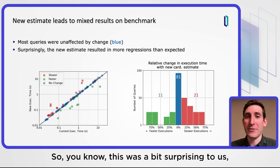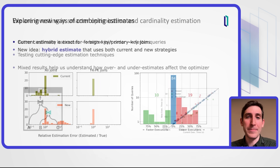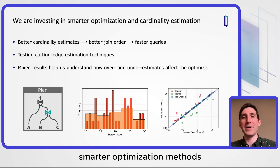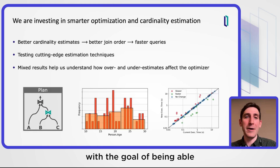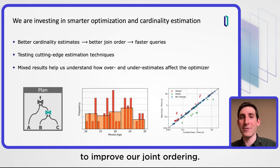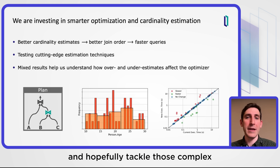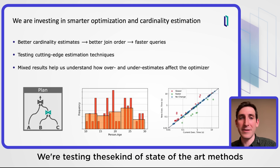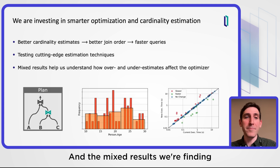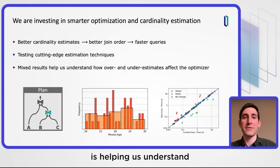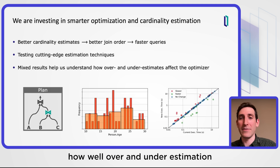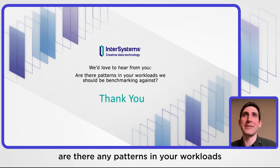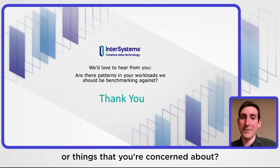This was a bit surprising to us and there's a lot more work to be done. Our group is investing in smarter optimization methods and better cardinality estimates with the goal of improving our join ordering, which can lead to faster queries and hopefully tackle those complex queries you might face. We're testing state-of-the-art methods and different techniques to improve what we have currently. The mixed results we're finding are helping us understand how over- and under-estimation affects the optimizer. Are there any patterns in your workloads that maybe we should be looking at, or things that you're concerned about? Thank you.